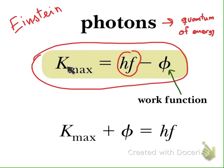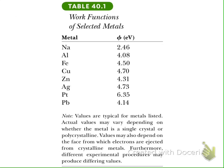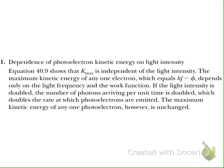Since the energy of the photon depends on frequency, the maximum kinetic energy of the electron also depends on the frequency. There is no intensity in this equation. So the maximum kinetic energy is independent of the intensity, and that agrees with the experimental results.